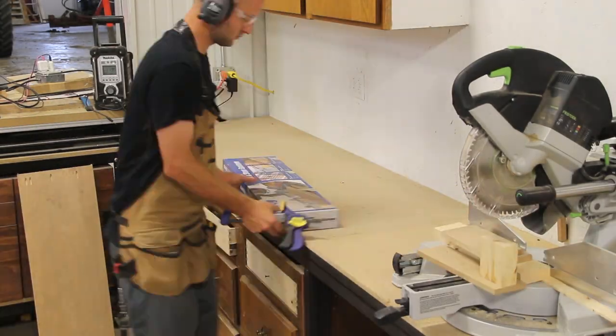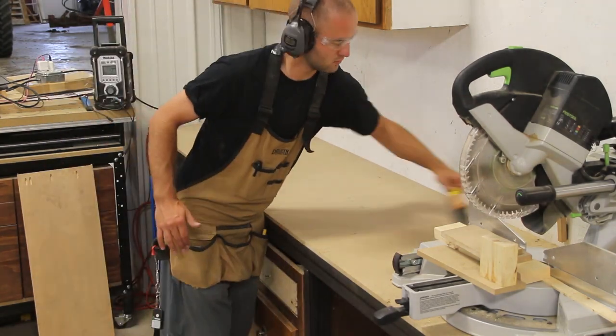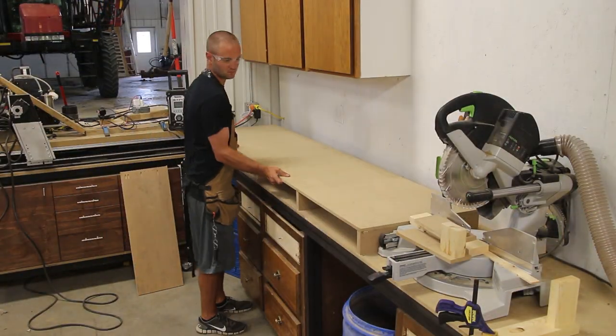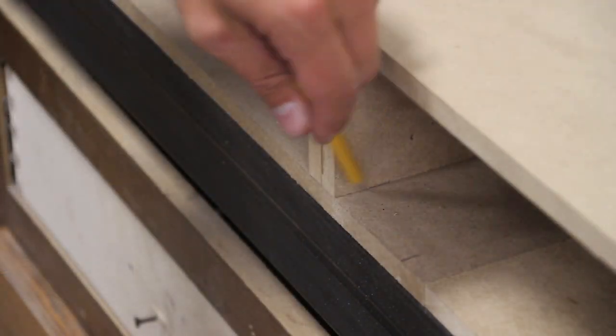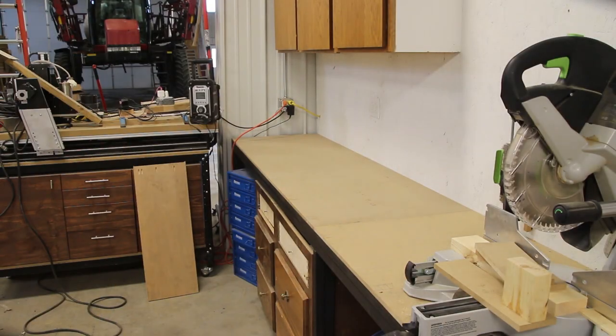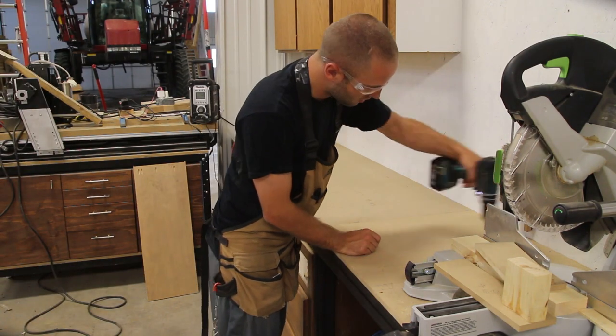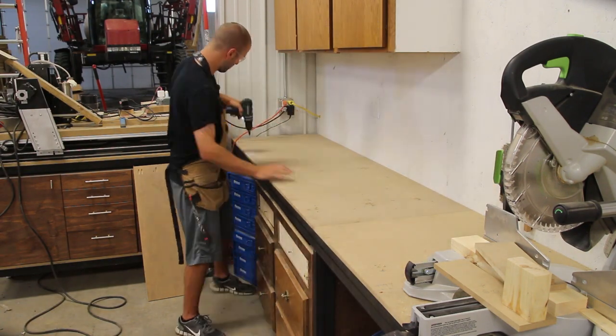I clean up the miter saw bench to prepare for installation. I put the support wing in place and use a pencil to mark each vertical support location. I then drill three holes per vertical support. I can then put the support wing back in place and pre-drill and drive a screw in each hole.